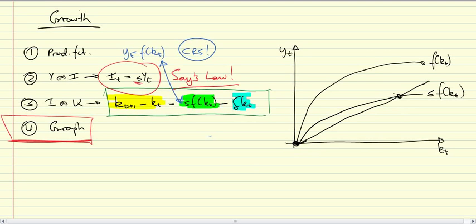So that we're getting some function like that, delta kt, I'm going to write it on there, and we have an intersection between investment, S of f of kt, and depreciation, delta kt. That is the point that I've drawn here. Let me emphasize it.